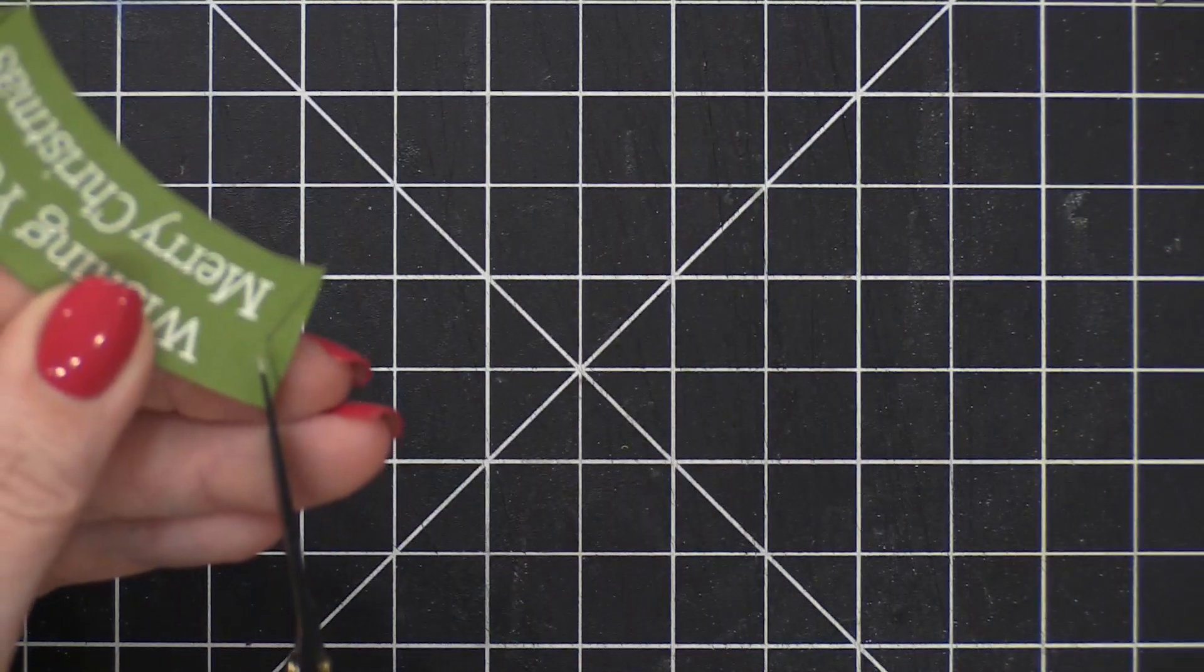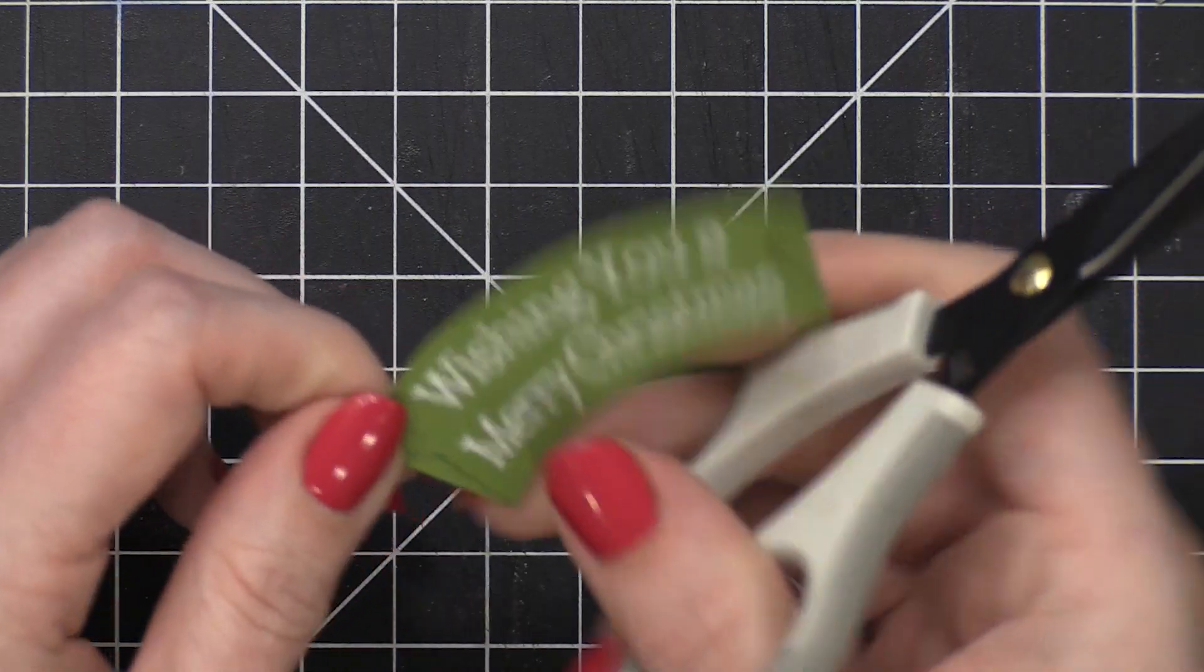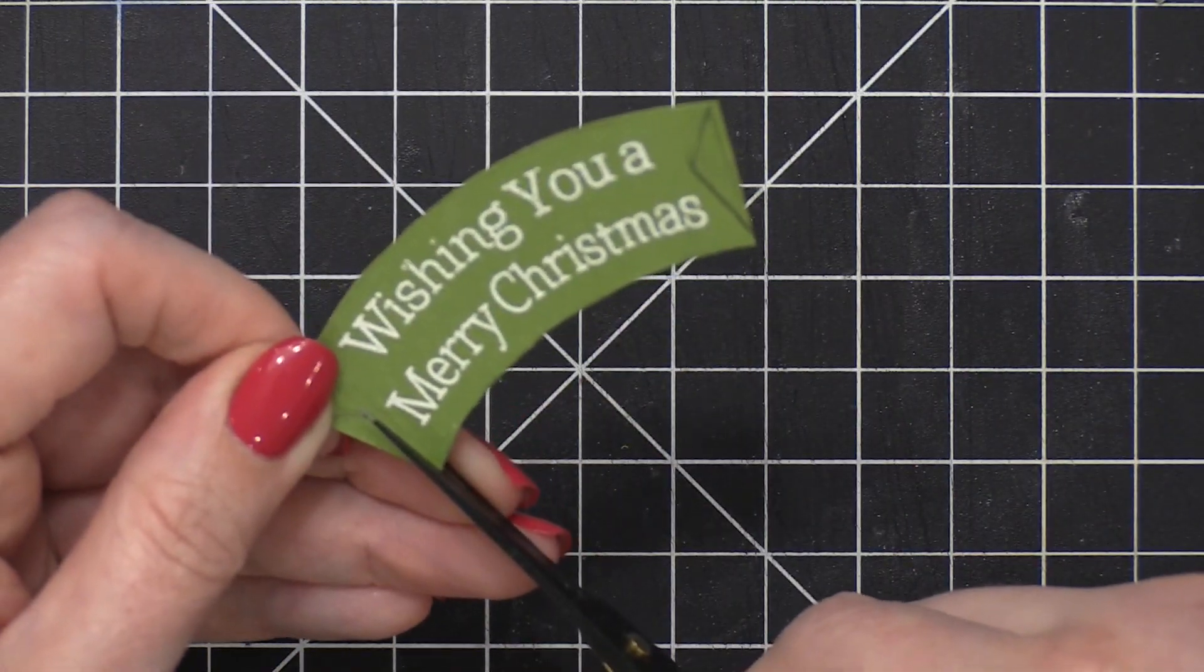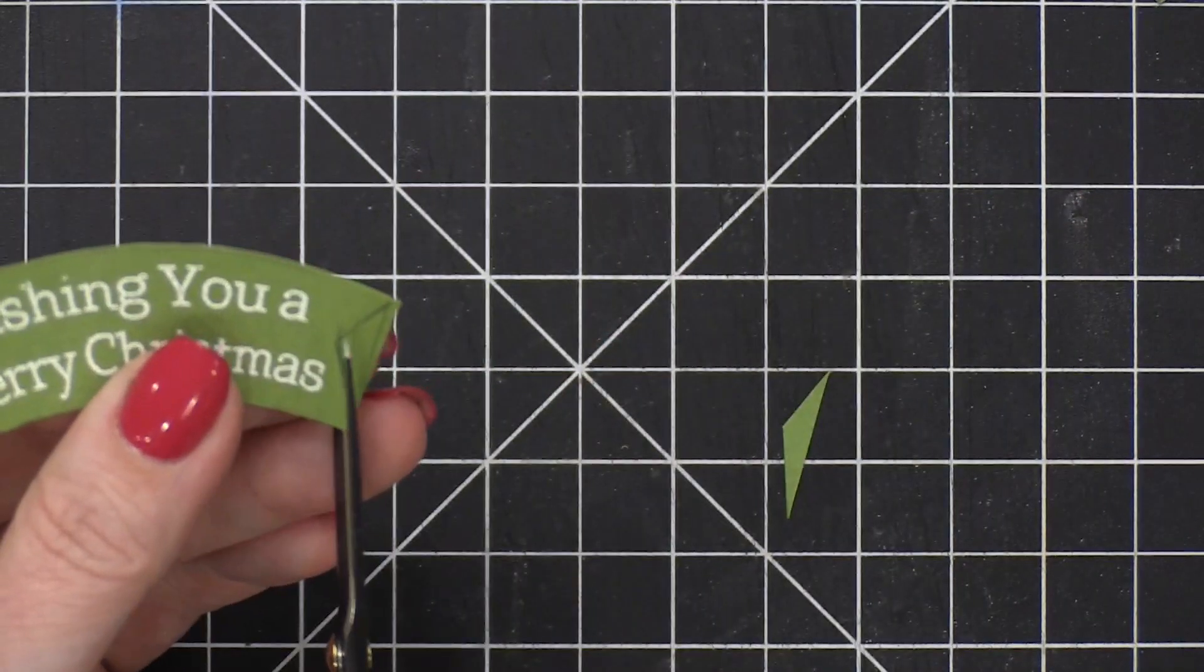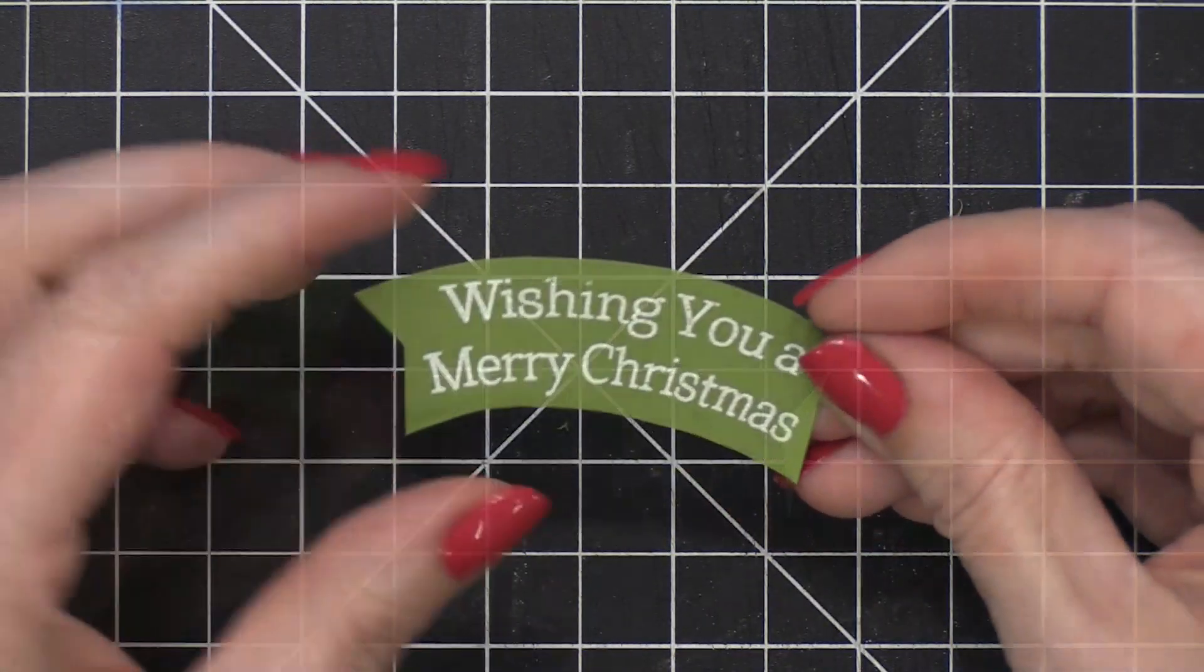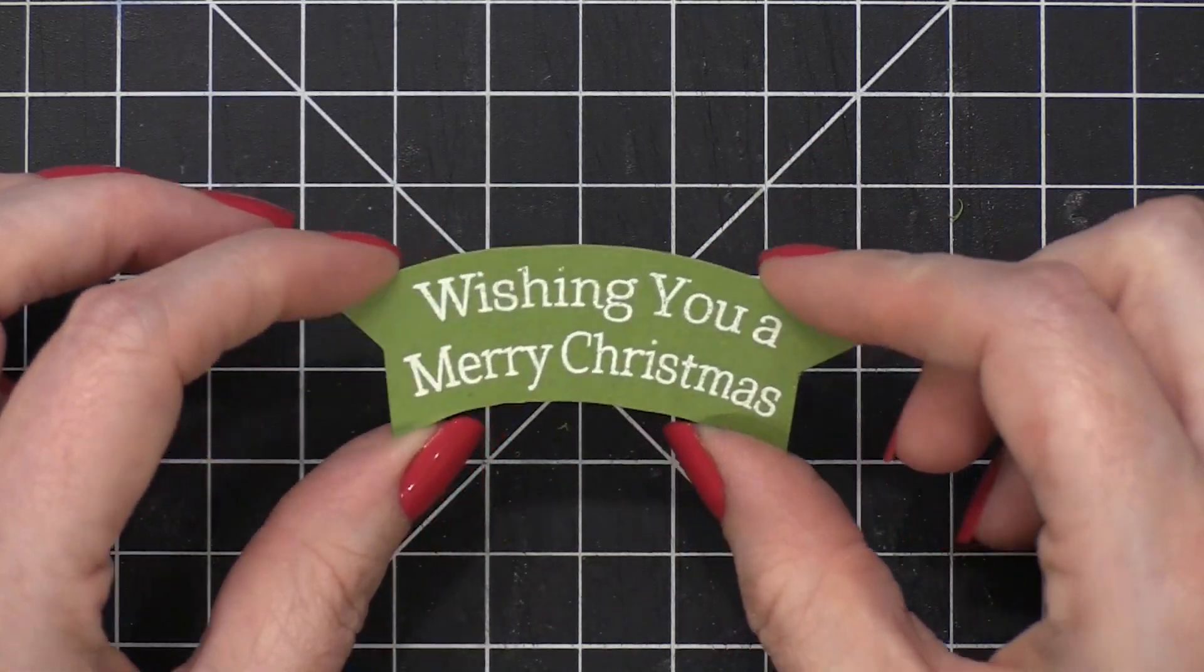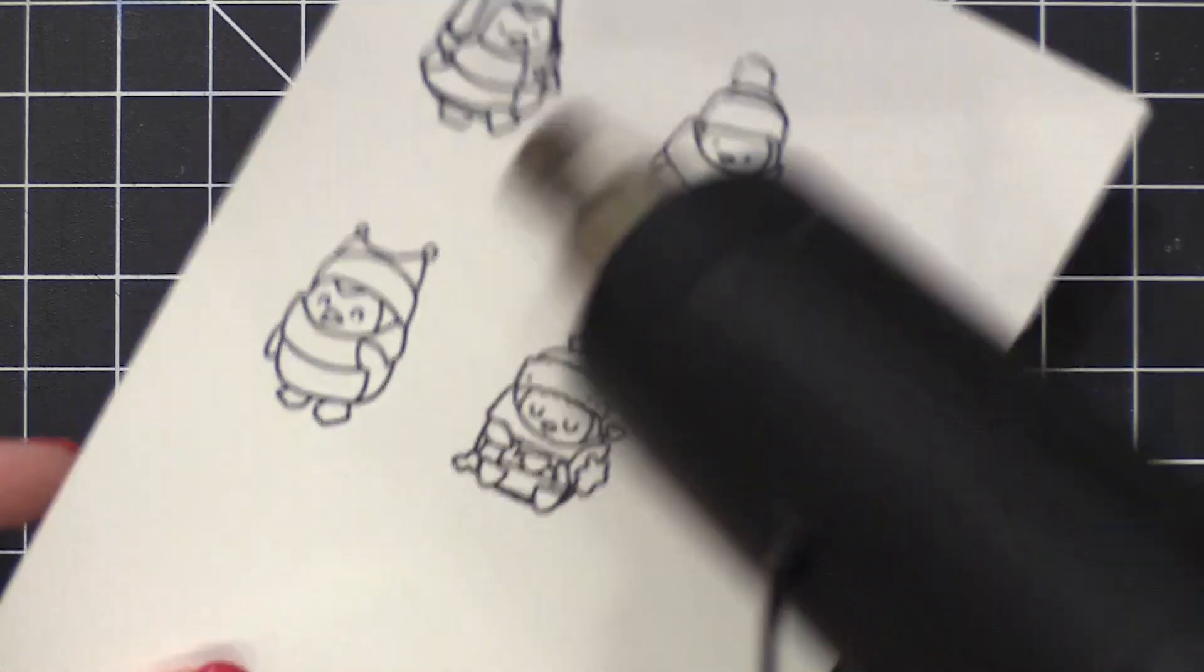And then I took my scissors and just cut halfway in to create kind of a V shape on the end here. And I apologize for my camera being out of focus. It was focusing on my grid mount instead of what I was doing since I wasn't centered in the frame. So here I have my curved banner. And I'm going to set that aside while I work on other areas of the card.